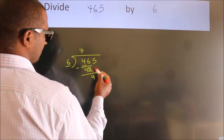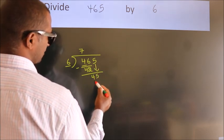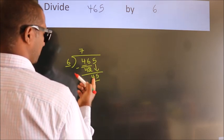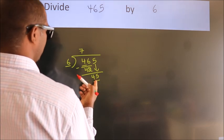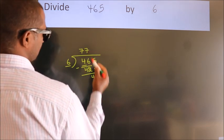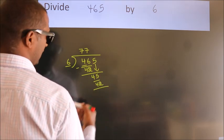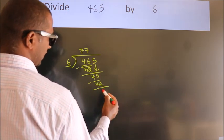After this, bring down the next number. So 5 down. So 45. A number close to 45 in 6 table is 6 times 7 equals 42. Now we subtract. We get 3.